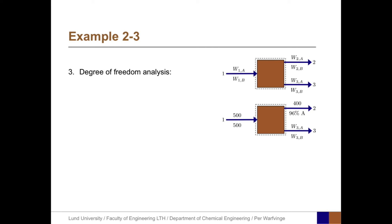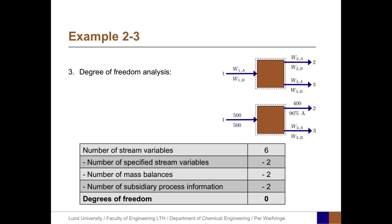For the degree of freedom analysis, the number of stream variables is 6, the same as in Example 2.1. The number of specified stream variables is 2 — the 500 kg and 500 kg in stream 1. We can set up two mass balances, one for component A and one for component B. The number of subsidiary process information is 2, referring to the 400 kg total and the 96% concentration of A in stream 2. The degrees of freedom is consequently zero.